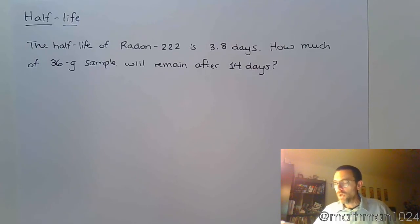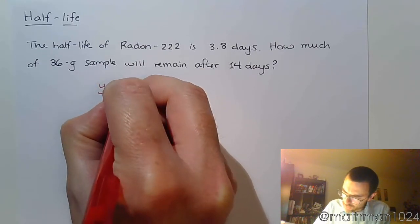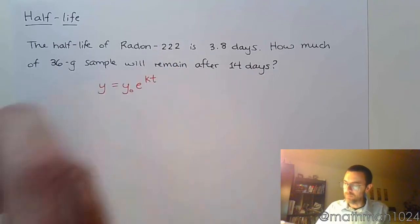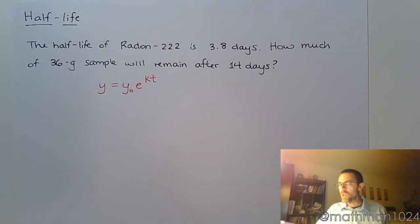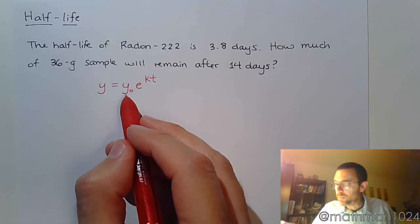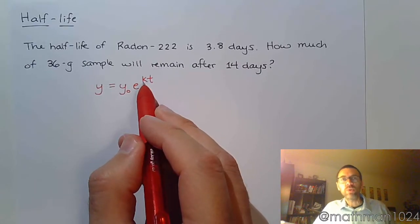We know how long a half-life is, and that information right there is enough for us to write our equation that will answer any other questions about this problem. So if we go back to our basics, y equals y-naught e to the kt. We know what we're starting with, we know the initial value is 36 grams. We know that the time is going to be 14. What we don't know is the k value.